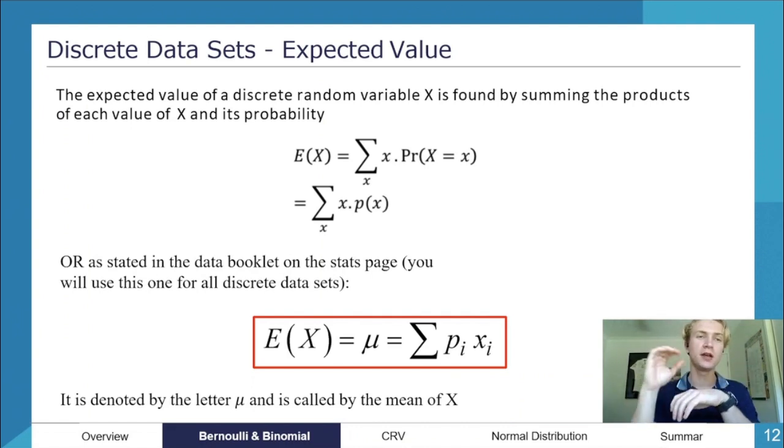Now for our discrete data sets, these are what you would have gone over in year 10. So the expected value of a discrete random variable X is found by summing the products of each value of X and the probability of achieving that. Mathematically we write this out as, you know, the sum between X times probability of X equals x.